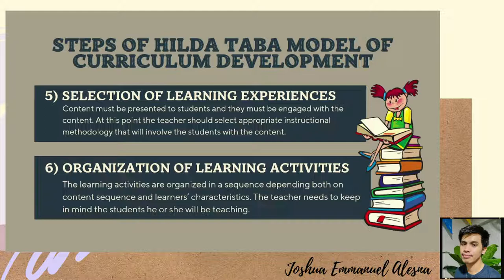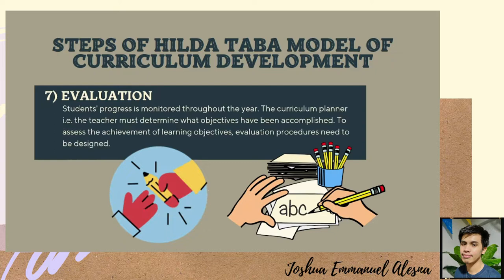The last step is evaluation. Students' progress is monitored throughout the year. The teacher must determine what objectives have been accomplished. To assess the achievement of learning objectives, evaluation procedures need to be designed. Evaluation is a very important factor in teaching because it assesses how much our students have learned. It also gives students an idea about the progress they are making. Thus, we have to carefully design our evaluation so that it will really target what it purports to measure and gauge our students' learning.